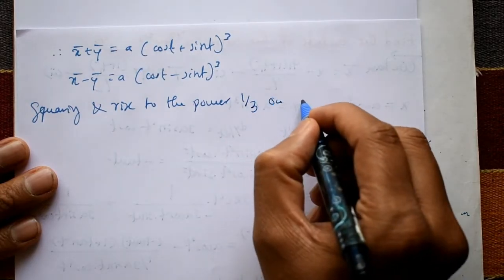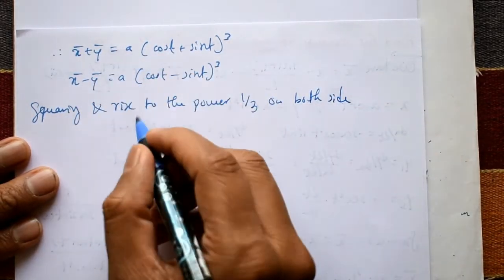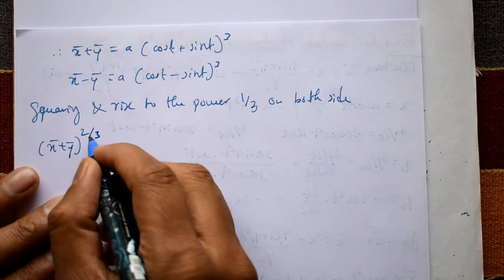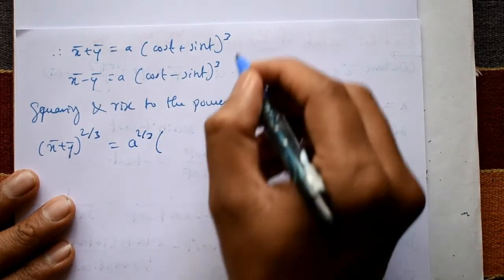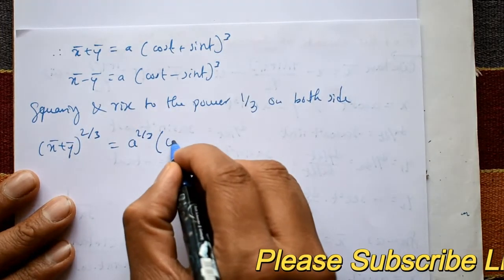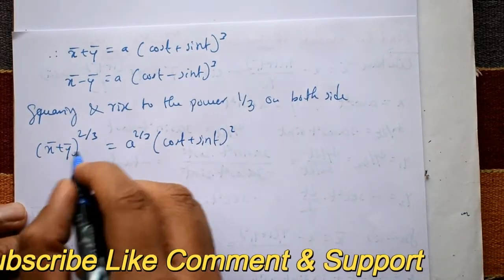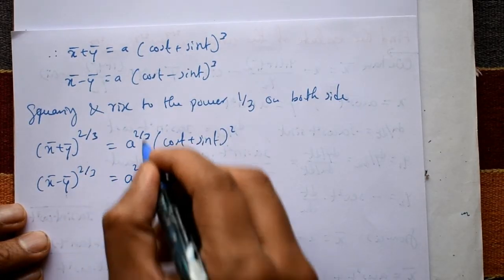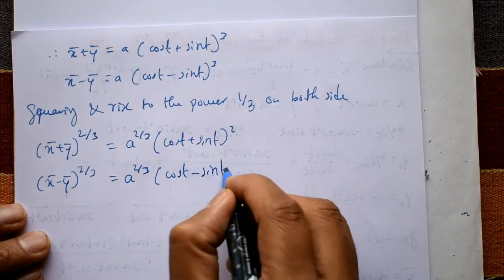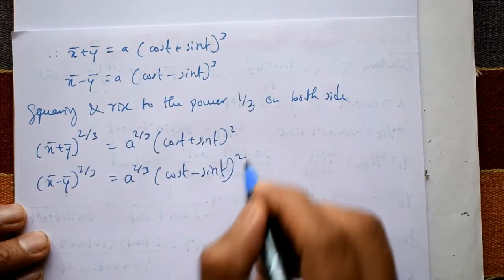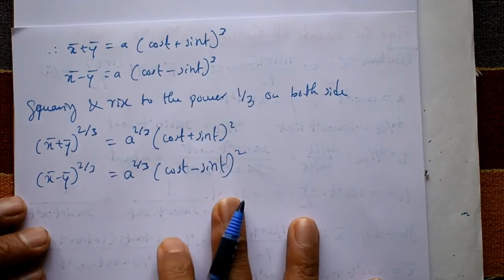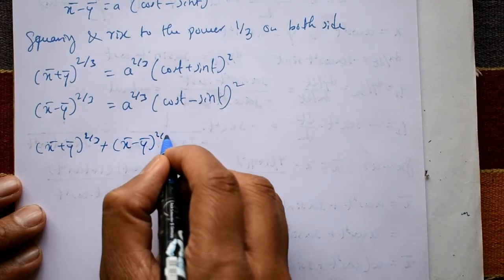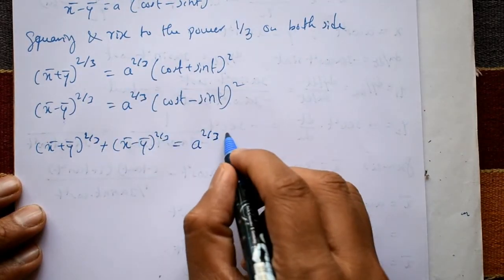Raising both sides to power 2/3: (x̄ + ȳ)^(2/3) = a^(2/3)·(cos(t) + sin(t))² and (x̄ - ȳ)^(2/3) = a^(2/3)·(cos(t) - sin(t))². Expanding using (a+b)² and (a-b)² formulas: the first gives a^(2/3)·(cos²t + sin²t + 2·cos(t)·sin(t)) and the second gives a^(2/3)·(cos²t + sin²t - 2·cos(t)·sin(t)).